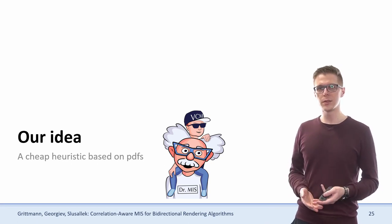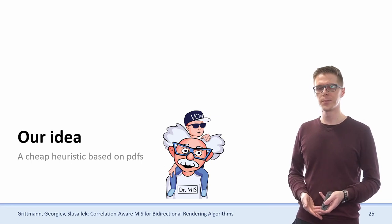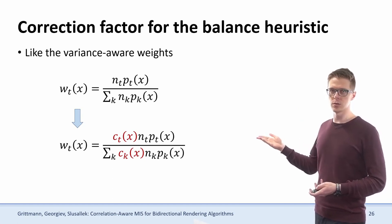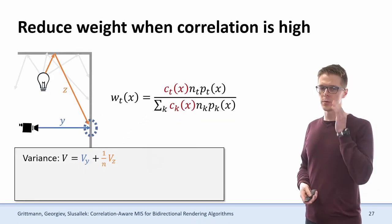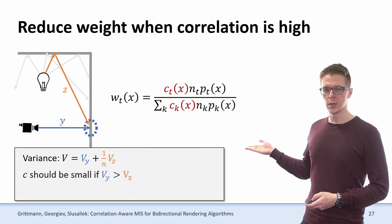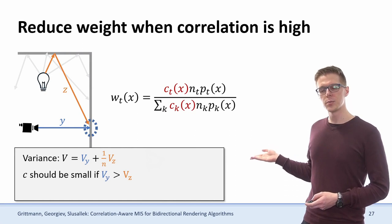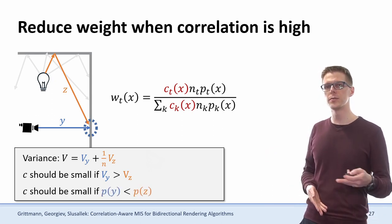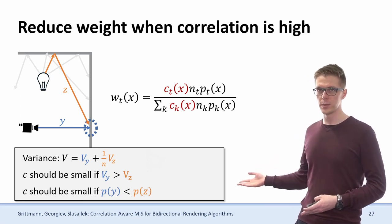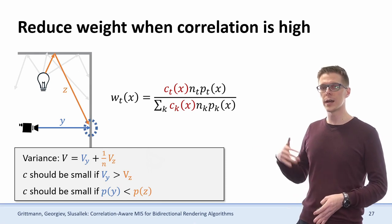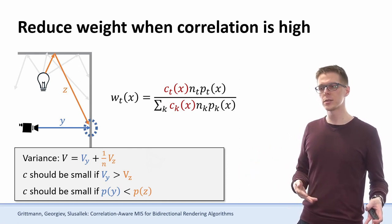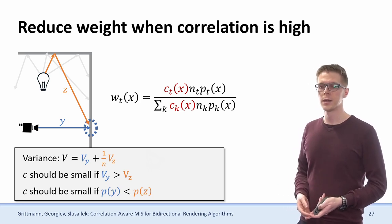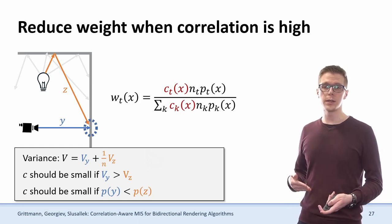Our idea is to replace those costly variance estimates by something based only on sampling probabilities. We again take the balance heuristic and inject additional weighting terms, which we call correction factors, or short C. The variance is determined by the prefix variance and the suffix variance, and whenever the prefix variance is much higher than the suffix variance, we should reduce the weight quite a bit because there's a lot of correlation. Instead of computing variances, we look at sampling probabilities — we assume that whenever the sampling probability is very high, variance will be low. That assumption is also used successfully in MIS already in the power heuristic, the maximum heuristic, and the cutoff heuristic. However, we can't directly compare those different PDFs because they have different units.